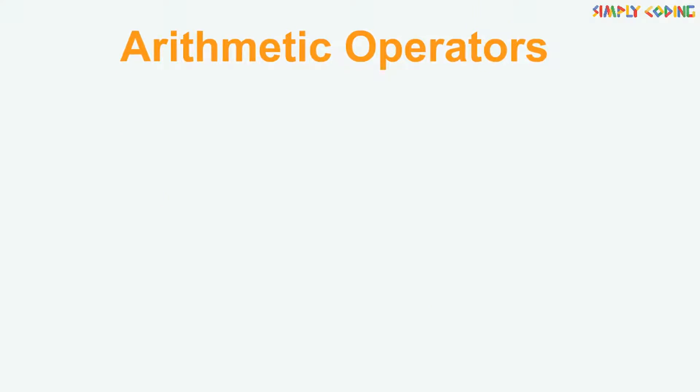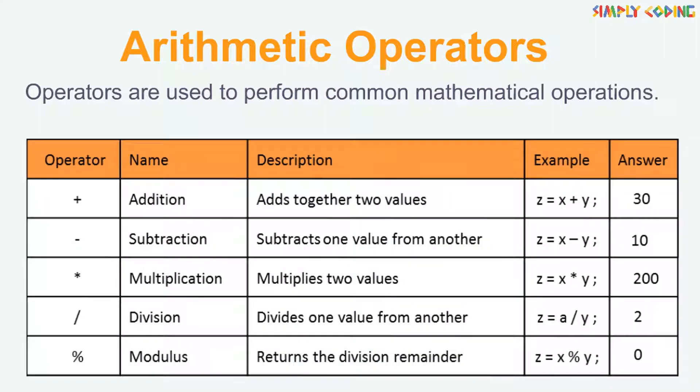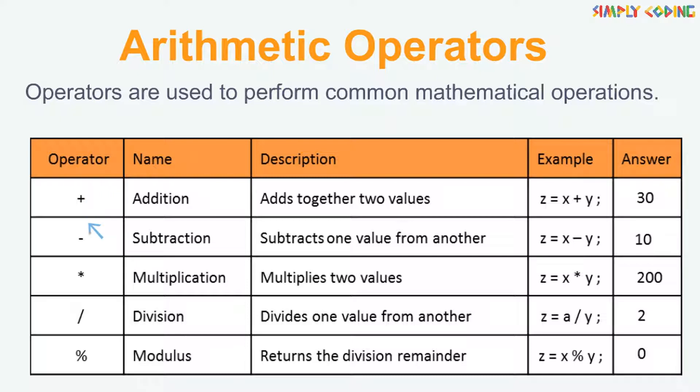Next are arithmetic operators which are used to perform common mathematical operations. There are five types of arithmetic operators: Plus, minus, multiply, divide, and modulus or remainder. Assuming x is 20 and y is 10, the table shows syntax for all the arithmetic operators and their result.